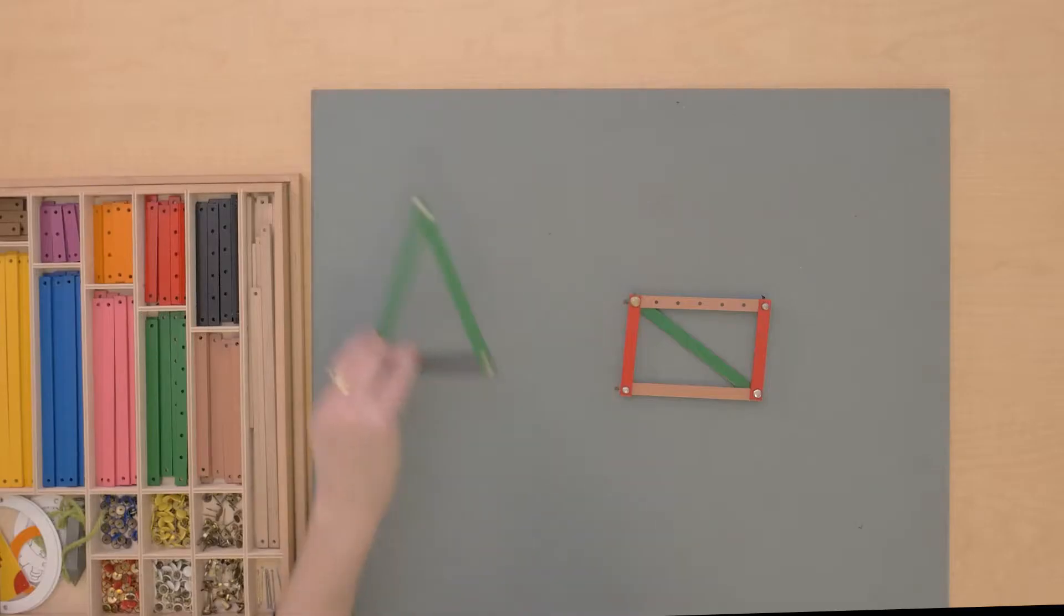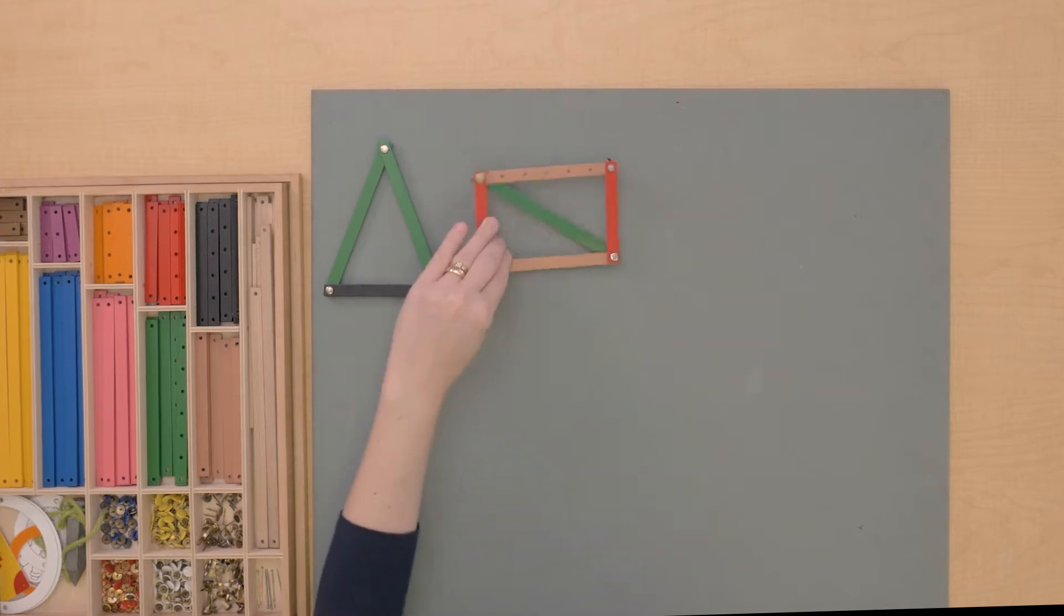So a triangle is stable on its own. A rectangle needed one diagonal to make it stable. Let's take a look at a pentagon.